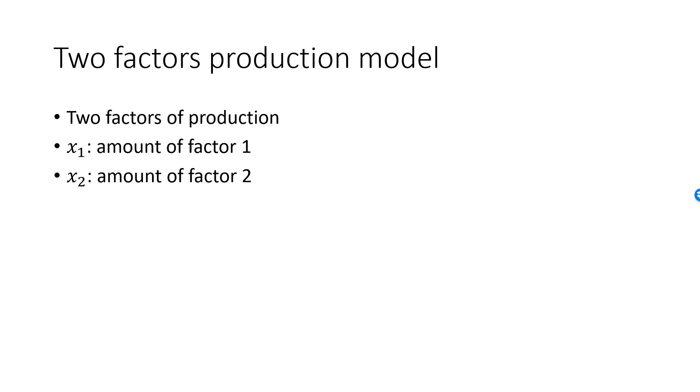It is not important exactly which these factors are; they are arbitrary. However, it is common to use the convention that one of the factors is a bundle of all types of capital used in the production, and the corresponding x value is some appropriate measure of how much capital we use. The other factor is then a bundle of all types of labor.